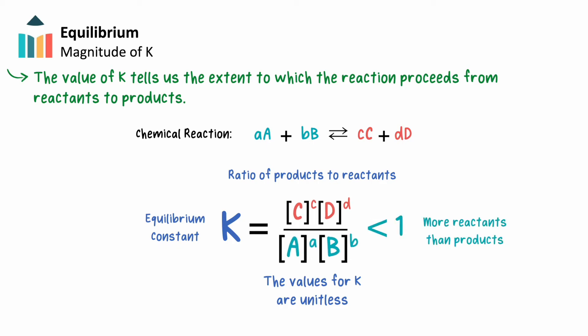If K is less than 1, the denominator must be larger than the numerator, meaning there are more reactants than products. If K is equal to 1, then there are about equal concentrations of reactants and products at equilibrium.